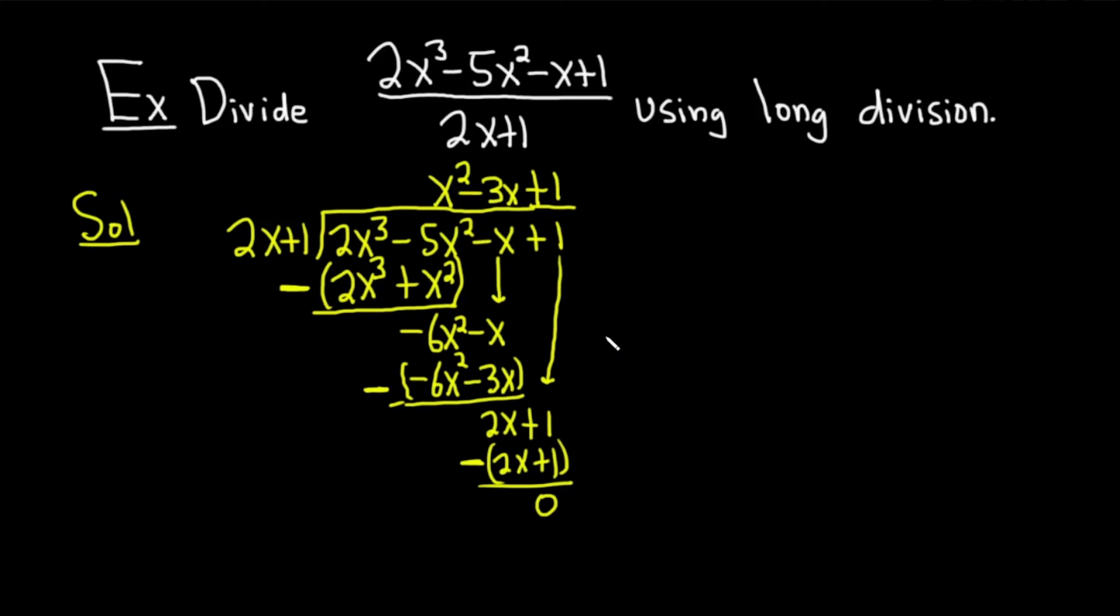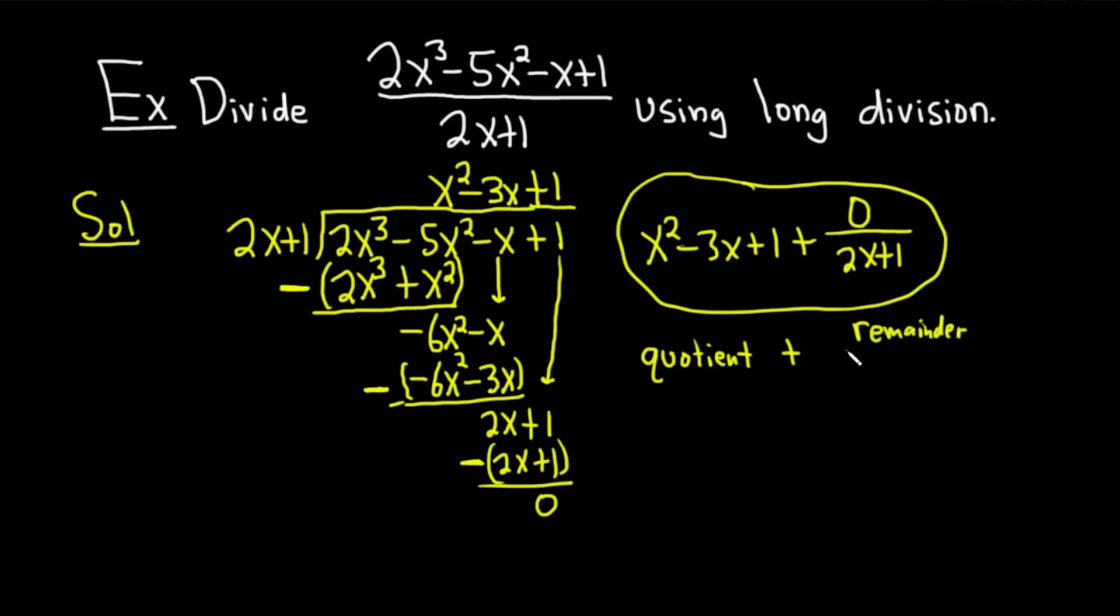Now we can write our answer down. The answer is always going to be the quotient, which is up here. So it's x². This is the quotient. x² - 3x + 1 plus the remainder, which is 0, over the divisor, which is 2x + 1. So this last piece is 0. You don't really have to write it, but I wanted to write it to show you that the answer always has that form. It's always quotient plus remainder over divisor.